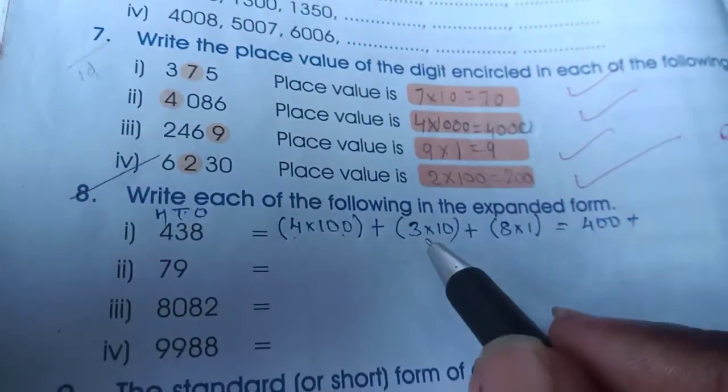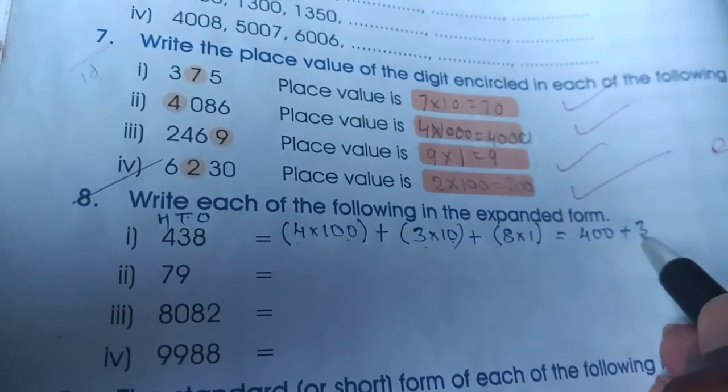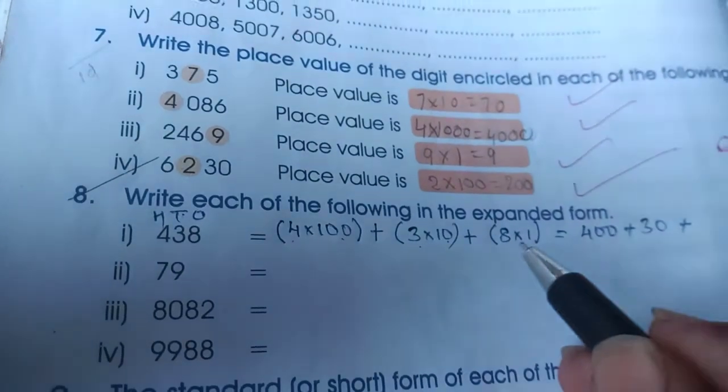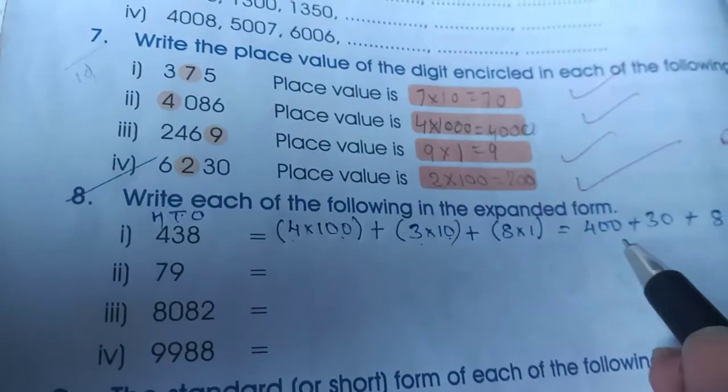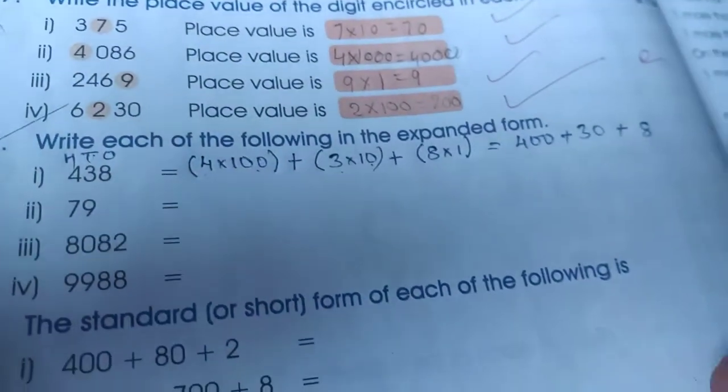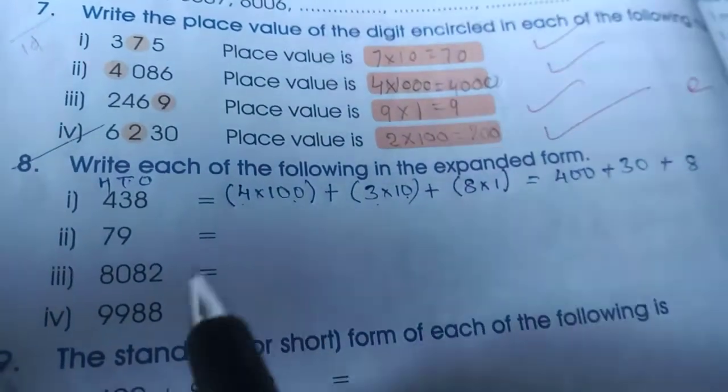Plus 3 into 10, that is 3 into 10 is nothing but 30, plus 8 into 1 is equal to 8. This is the first step. The second step, in two steps we can solve the problem.